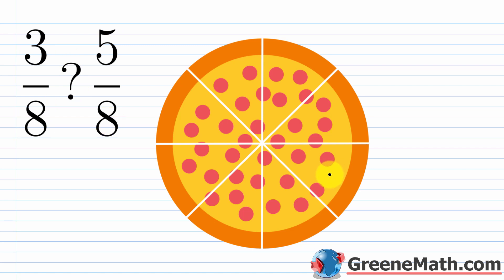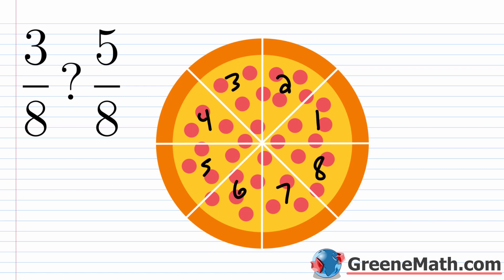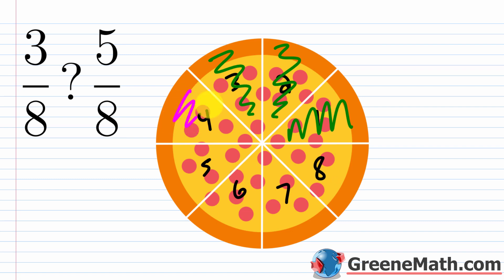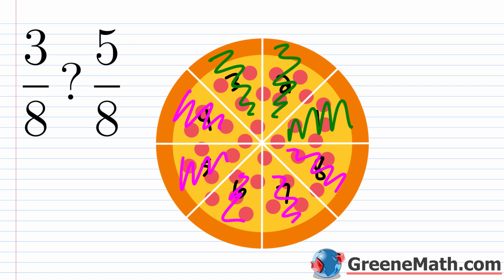Think about a pizza split into eight equal slices. Let's say I eat three slices — three eighths of the pizza — and you take five out of the eight slices. You got five slices out of eight, whereas I only got three slices out of eight. When we have the same denominator, it's very easy to compare: we just look at which numerator is bigger. Five is bigger than three, so three eighths is less than five eighths.